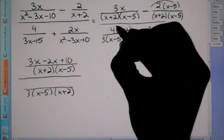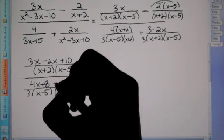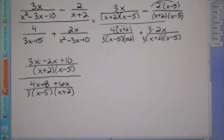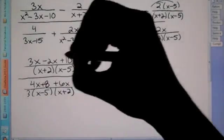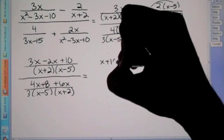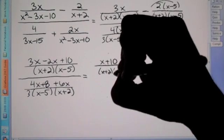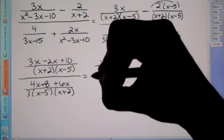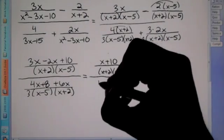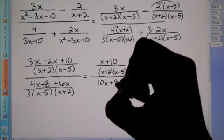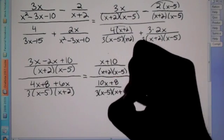Here, if we distribute the 4, we have 4x plus 8. And we still have here the 3 times 2x, which is positive 6x. So now from here we're going to combine like terms. So up here, 3x minus 2x is 1x plus 10, over x plus 2 times x minus 5. We just combine like terms in the numerator.